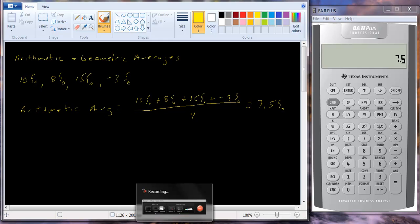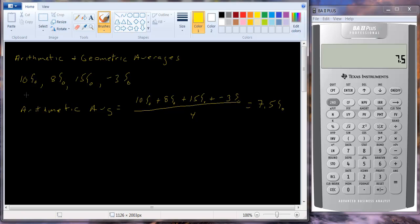So in an average year you earned 7.5%. The geometric average on the other hand answers the question what was your average compound return per year over a particular period. This is not the same thing. This is not a compound return. We've just added them up. So how do we do the geometric return?